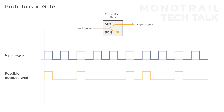In this case, if you feed the module a steady clock, every time the function receives a clock pulse, there's a 50% chance that pulse is passed on to its output, and a 50% chance it's blocked. On average, this results in half the amount of signals passing on. However, because the decision is made for each individual high signal, the output will be a random pattern, and not a clear mathematical division.